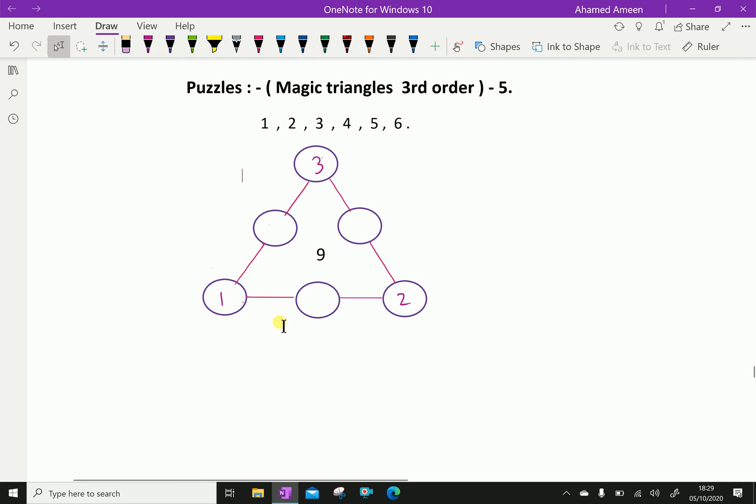So here, 1 plus 2 is 3, 9 minus 3 is 6. So that's here 6. That means if we add 1 plus 6 plus 2 is 9. Like that here, 2 plus 3 is 5.